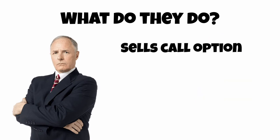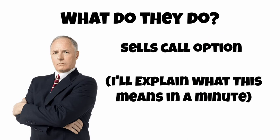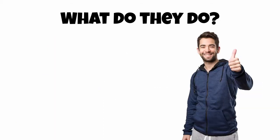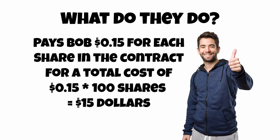In this case, Bob sells a call option contract that represents 100 shares that will expire January 29th with a strike price of $31. Dave agrees to buy this contract from Bob for 15 cents a share times 100 shares, since one contract represents 100 shares, for a total cost of $15.